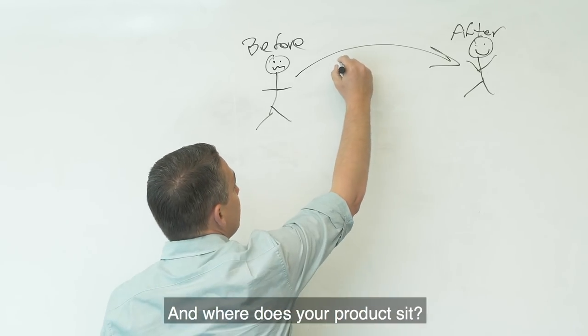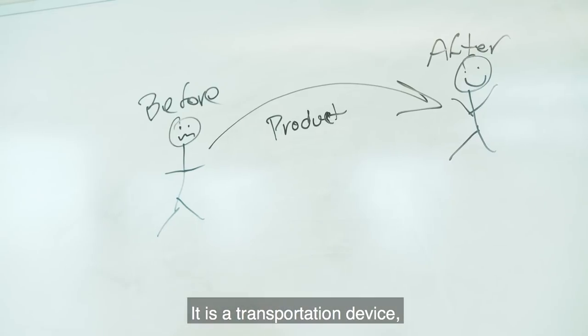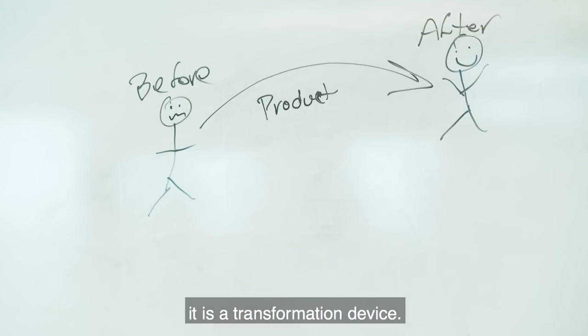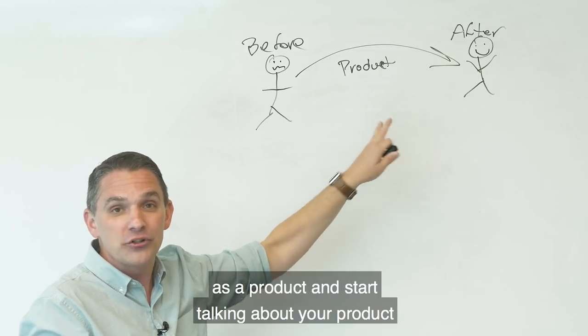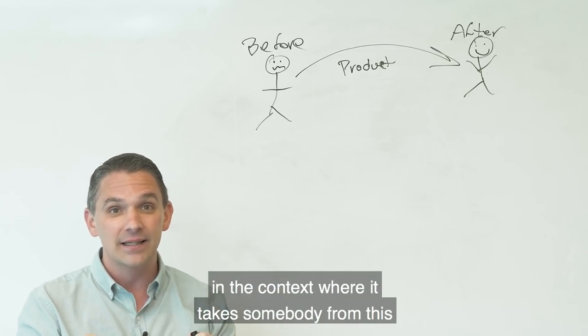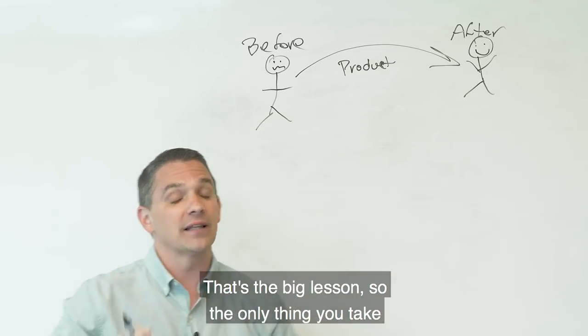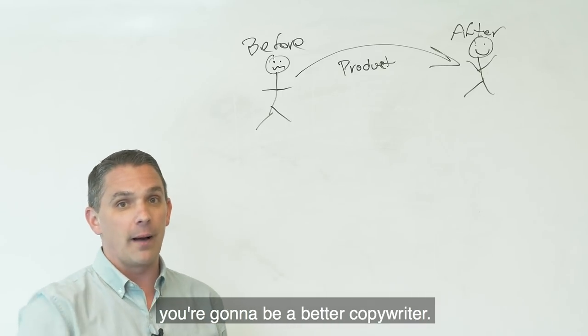So we're going to acknowledge where they are, empathy. Empathy combined with hope. That's speaking transformationally. And where does your product sit? Your product sits right here. It is a transformation device. So the key is stop talking about your product as a product. Start talking about your product in the context where it takes somebody from this before state to this after state. That's the big lesson. It's the only thing you take away from this. It's going to be enough. You're going to be a better copywriter.